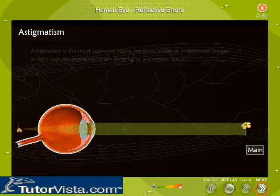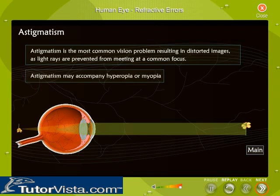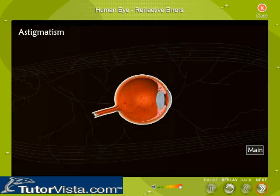Astigmatism is the most common vision problem, resulting in distorted images, as light rays are prevented from meeting at a common focus. Astigmatism may accompany hypermetropia or myopia.